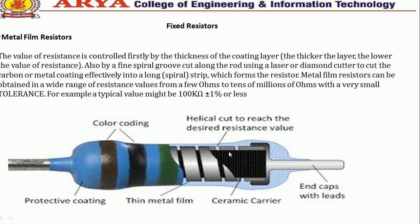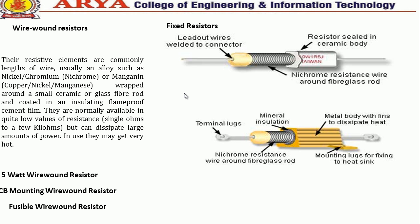Another type of fixed resistor is the wire-wound resistor. The resistive elements are commonly lengths of wire, usually an alloy such as nickel-chromium or manganese, wrapped around a small ceramic or glass fiber rod and coated in an insulating cement fill.